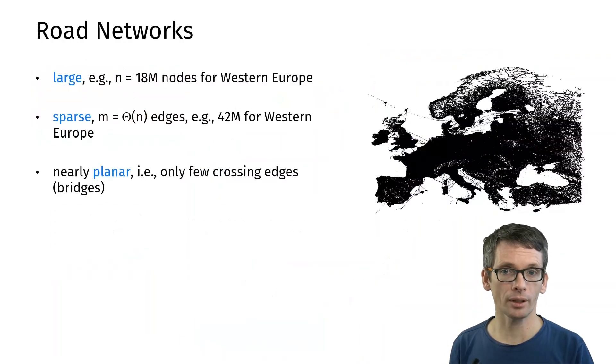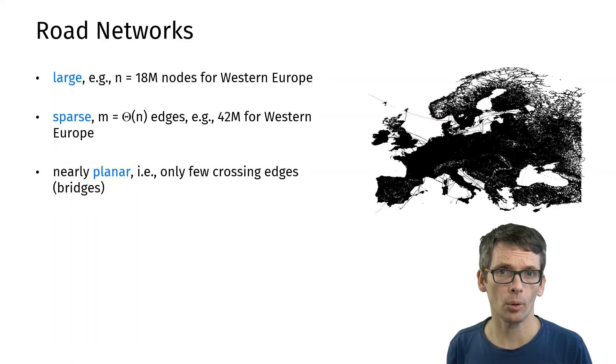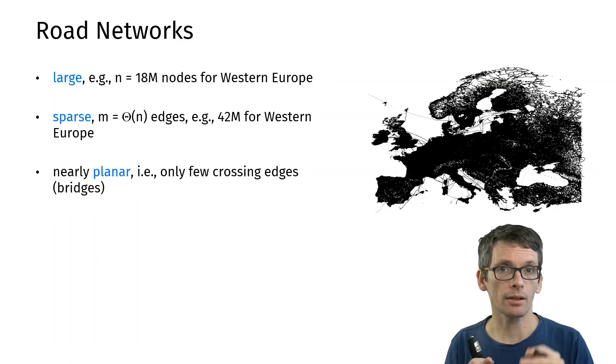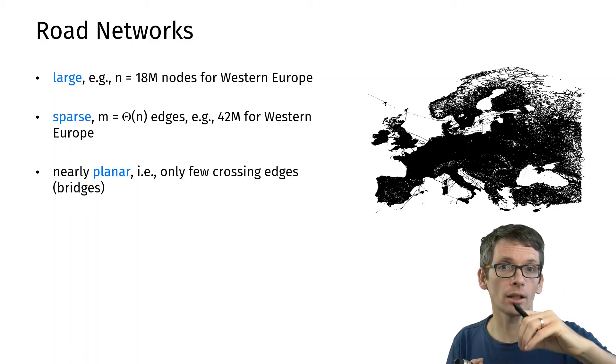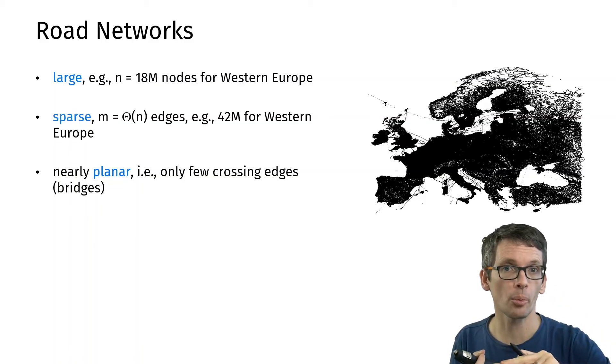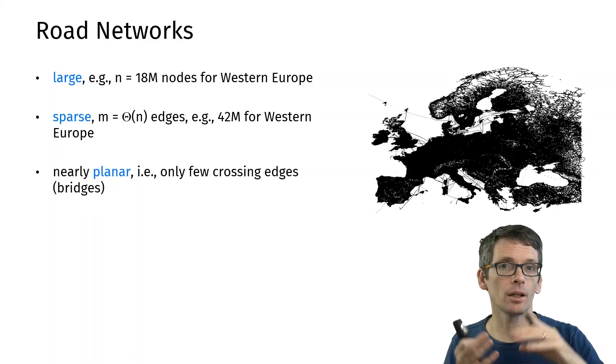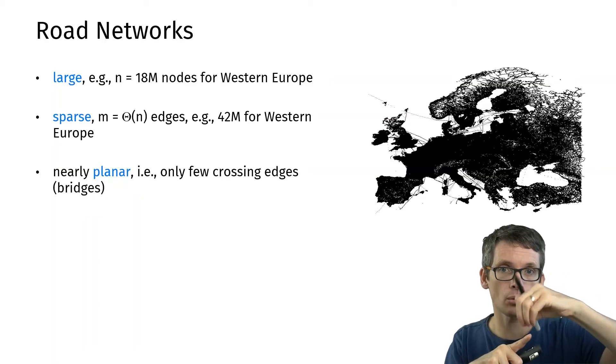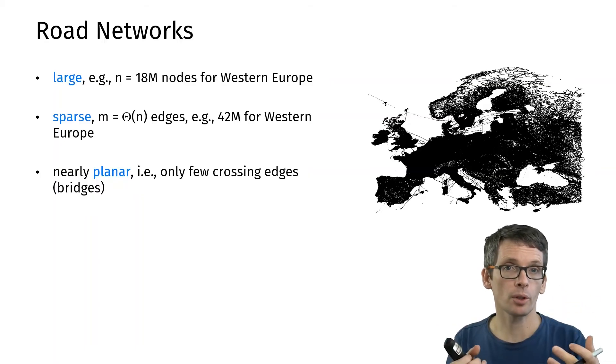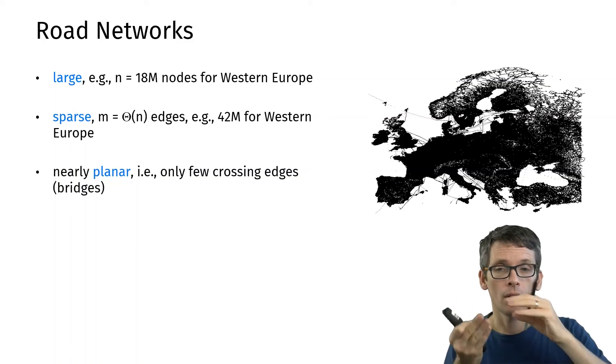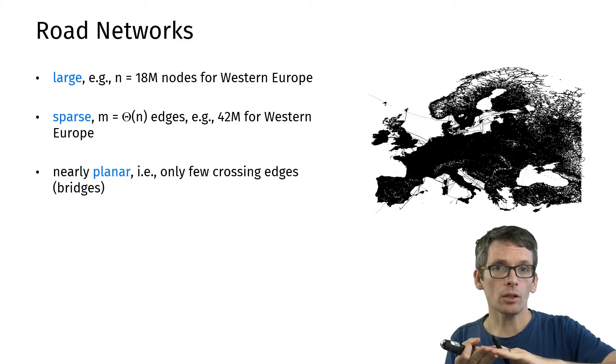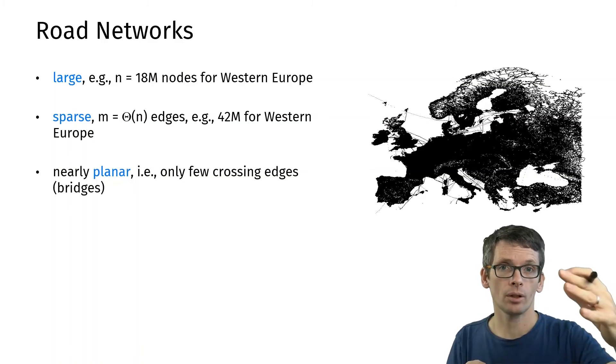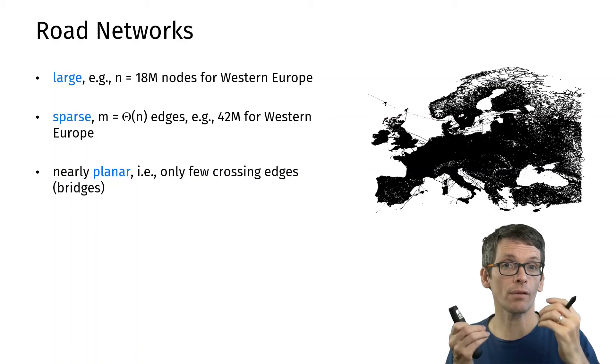Let's have a look at some road network data and this is again the data of Europe. It's a large dataset, 18 million nodes. The graph is sparse in the sense that the number of edges is linear in terms of the number of nodes, 42 million to be precise, and the graph is nearly planar in the sense that if two edges cross there's actually a crossing so there's actually a node there except if we have bridges.